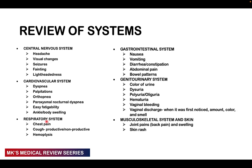For the respiratory system, ask about chest pain, cough — whether productive or non-productive — and any blood in the sputum, known as hemoptysis. For the gastrointestinal tract, ask about nausea, vomiting, diarrhea, constipation, abdominal pains, and bowel patterns.